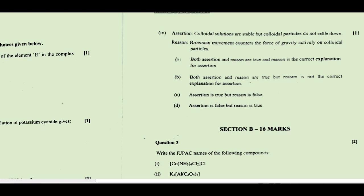The assertion is: colloidal solutions are stable but colloidal particles do not settle down — absolutely correct. The reason: Brownian movement counters the force of gravity actively on colloidal particles. Because of Brownian motion, colloidal particles are stable and can counter the force of gravity. There are other reasons like electrical charge too, but Brownian movement is given here as a reason. So both assertion and reason are true and the reason is the correct explanation for the assertion.